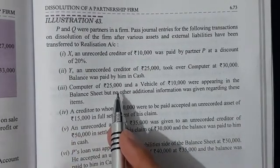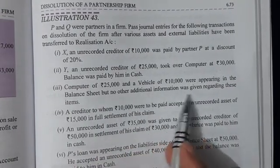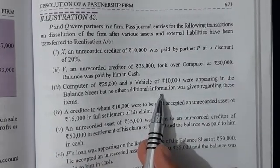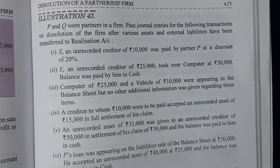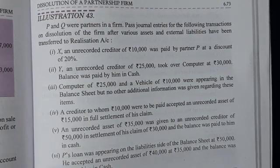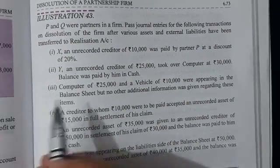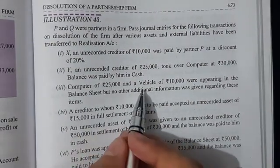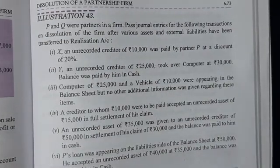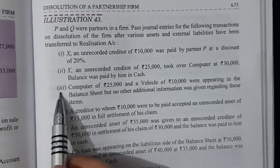Next transaction: a computer of 25,000 and a vehicle of 10,000 were appearing in the balance sheet, but no other additional information was given regarding these items. In this case, we assume their realized value is zero — nothing was received. If it were a liability with only book value given, we assume full payment was made. Therefore: No entry for this transaction.